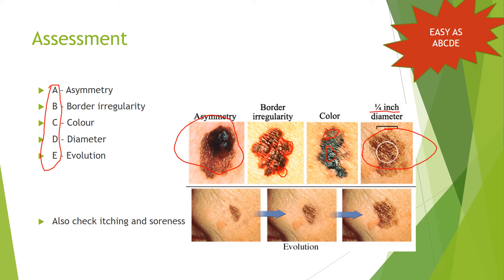The E in the ABCDE acronym stands for evolution, which is basically the changing of a mole over time. As you can see in this picture, it progresses and gets bigger over time. A couple of other things to check are whether the client is itching and if they have any general soreness.